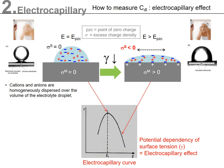Now let's look at how to measure the capacitance of electric double layers. Besides voltammetry and chronoamperometry or chronopotentiometry, a more basic measurement is based on the electrocapillary effect.